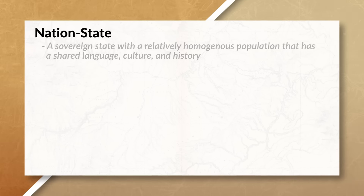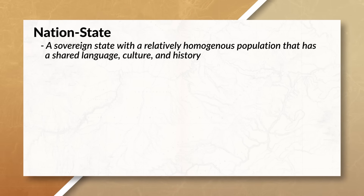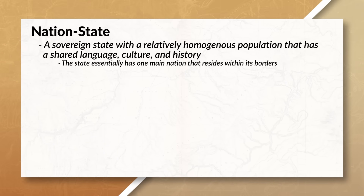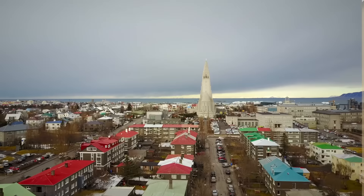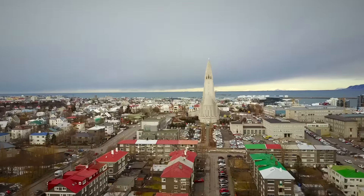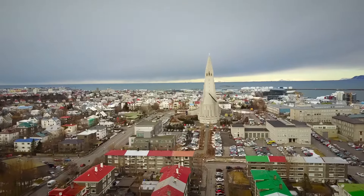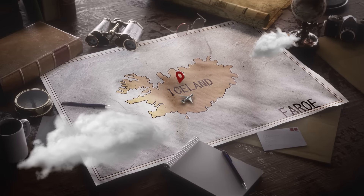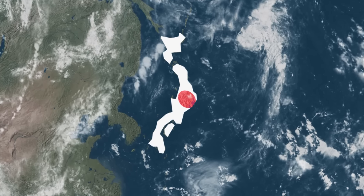Now that we've reviewed the concept of a nation and state, let's talk about the different types of states we see in the world today. The first is a nation-state. This is a sovereign state that has a relatively homogenous population. Citizens of the state often have a shared language, culture, and history. Oftentimes, these states have been more isolated in history. They also tend to be geographically smaller and are centered around one nation. Today, we could look at countries like Iceland or Japan as examples of a nation-state.